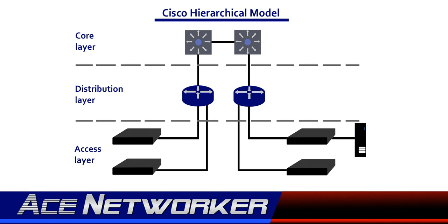The Cisco Hierarchical Model is more of a logical model than a defined physical layout model. It's a way to logically define your network to determine where priorities need to be placed, when it comes to security and certain types of equipment — routers, switches, firewalls, end user devices, etc.